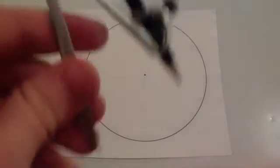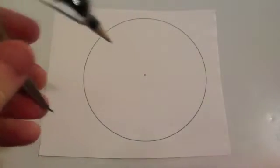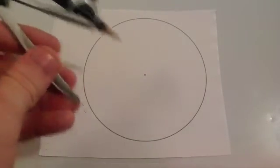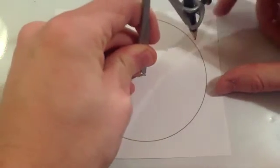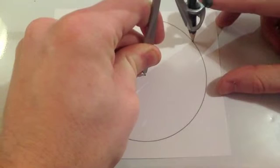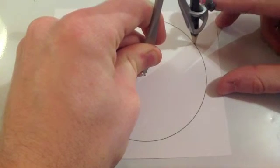To construct the hexagon within a circle, what you're going to do is you're going to need to draw a circle, have the centre point marked and have a compass and a pencil. Put the point of the compass on the centre of the circle and make sure the pencil is set to exactly the circumference of the circle.